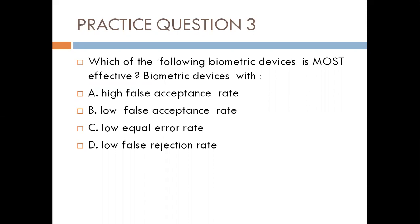You have to be familiar with biometric performance metrics to answer this question. A high false acceptance rate means the biometric device can accept people who are not supposed to be accepted — people not enrolled in the biometric system. That is a big problem. So if it is high, it's a problem; low false acceptance rate should be a plus. The false rejection rate means someone enrolled in the system is being rejected. The equal error rate is the point at which false acceptance rate equals false rejection rate. The lower the equal error rate, the better the biometric device. So our answer here is C.